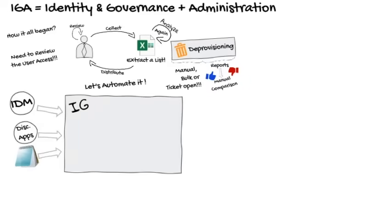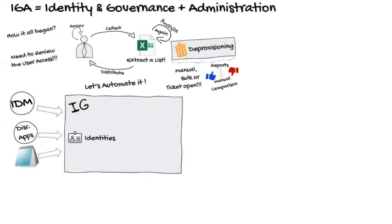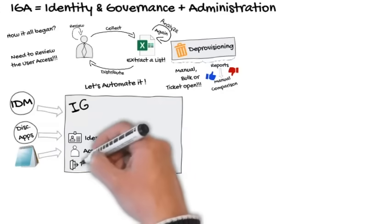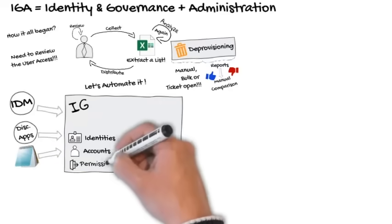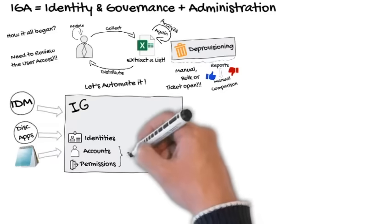All of this collected information can be categorized simply into three types: Identities, which are people and their attributes; Accounts, which represent the user used on each system; and Permissions, which are the accesses that users can have in each system, such as groups, profiles, roles, etc. The name and complexity of the permission may vary from application to application.